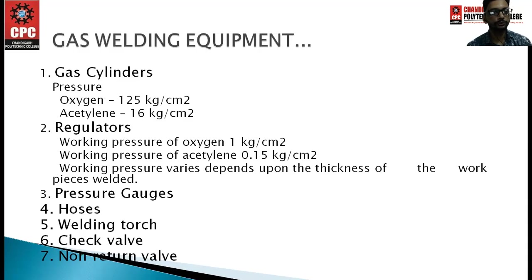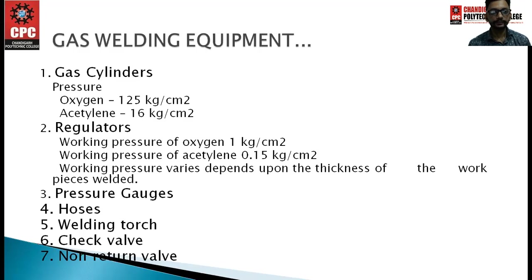Equipment for gas welding includes gas cylinders — oxygen cylinder pressure is 125 kg per cm², acetylene is 16 kg per cm². Regulators control working pressure: oxygen at 1 kg per cm² and acetylene at 0.15 kg per cm², varying with workpiece thickness. Other equipment includes pressure gauges, hoses, welding torch, check valve and non-return valve (NRV).